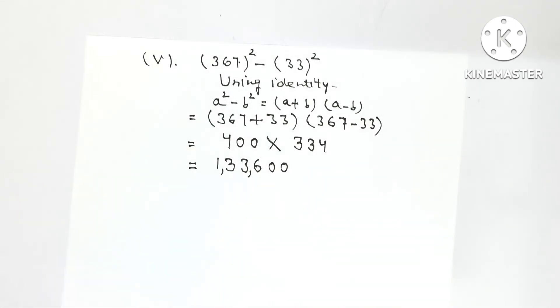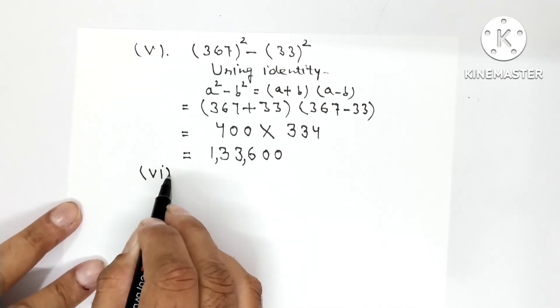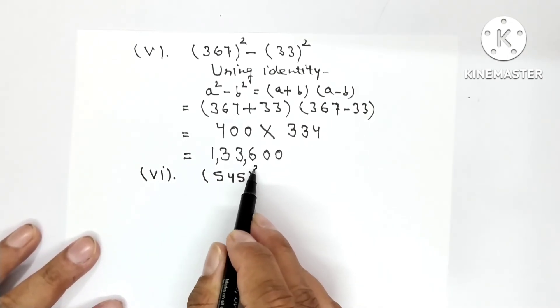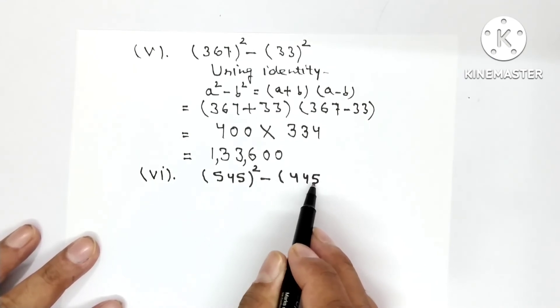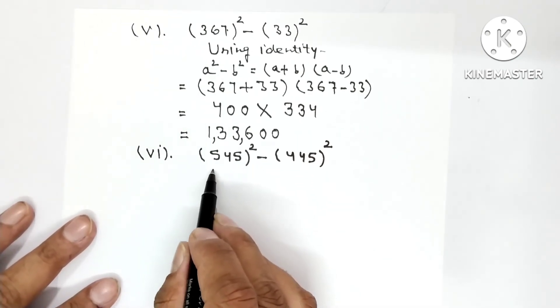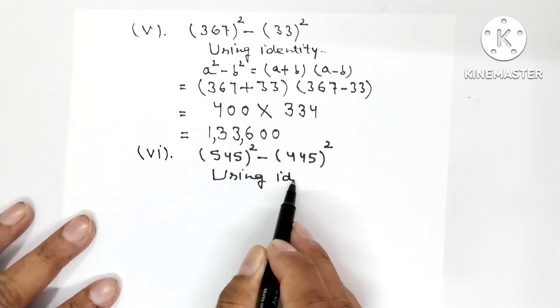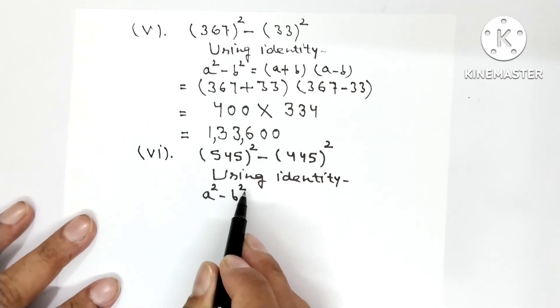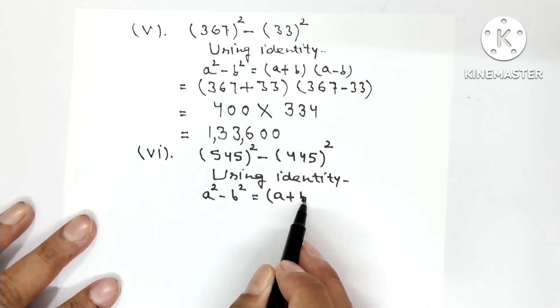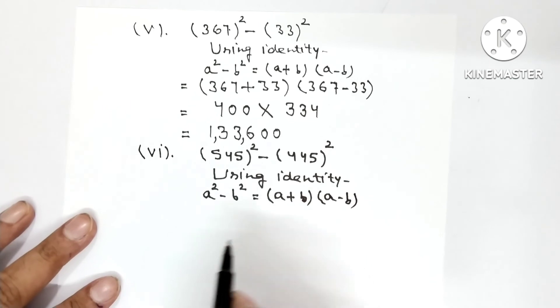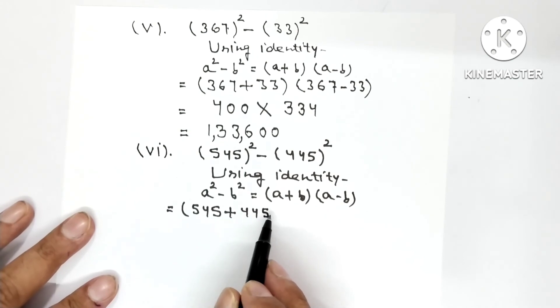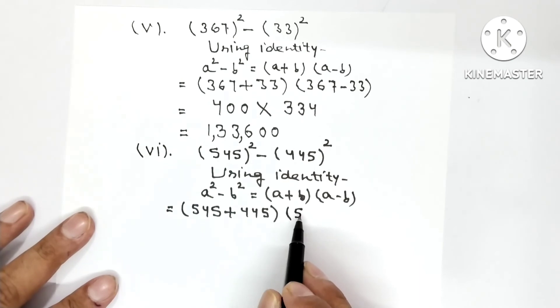Now after this is part number 6. In part number 6, what is given? 545 whole square minus 445 whole square. So in place of a we have 545 and in place of b we have 445. Using identity: a square minus b square is equal to a plus b in one bracket into a minus b.